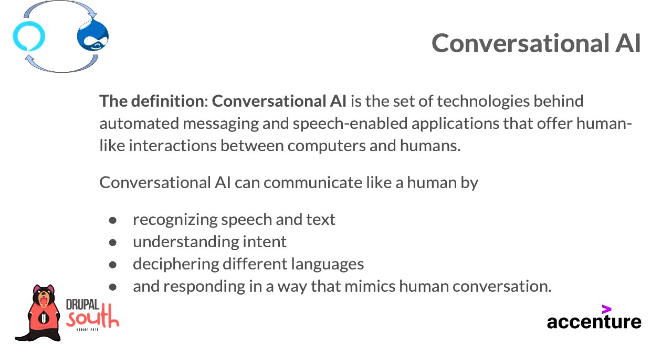And that's what our mindset about conversational AI is. But the official definition is essentially a set of technologies behind automated messaging and speech-enabled applications. Conversational AI actually includes not only speech-enabled, but also text messaging chatbots that we interact with a lot — like Facebook Messenger apps where they pop up with options like 'what do you want to do'. They are also part of conversational AI.